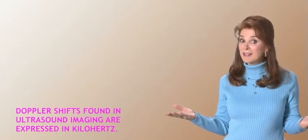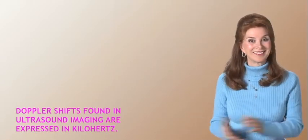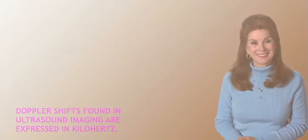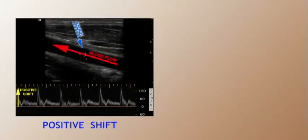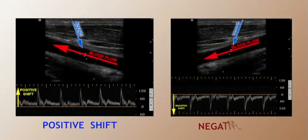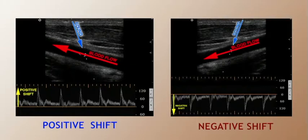How do you know if a Doppler frequency shift is positive or negative? Generally speaking, positive Doppler shifts are displayed above the spectral baseline, and negative Doppler shifts are displayed below the spectral baseline. Note that this is true when the spectral invert function is not enabled.